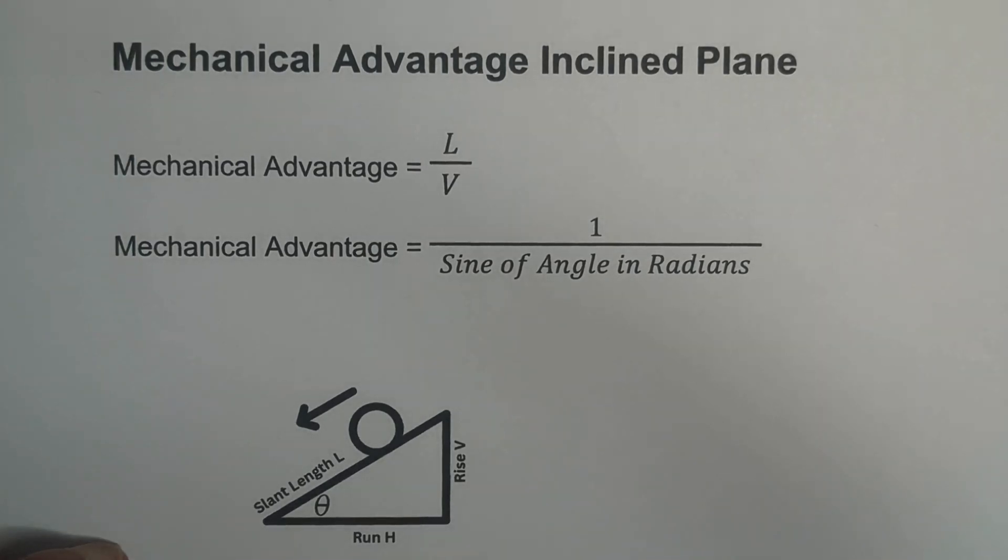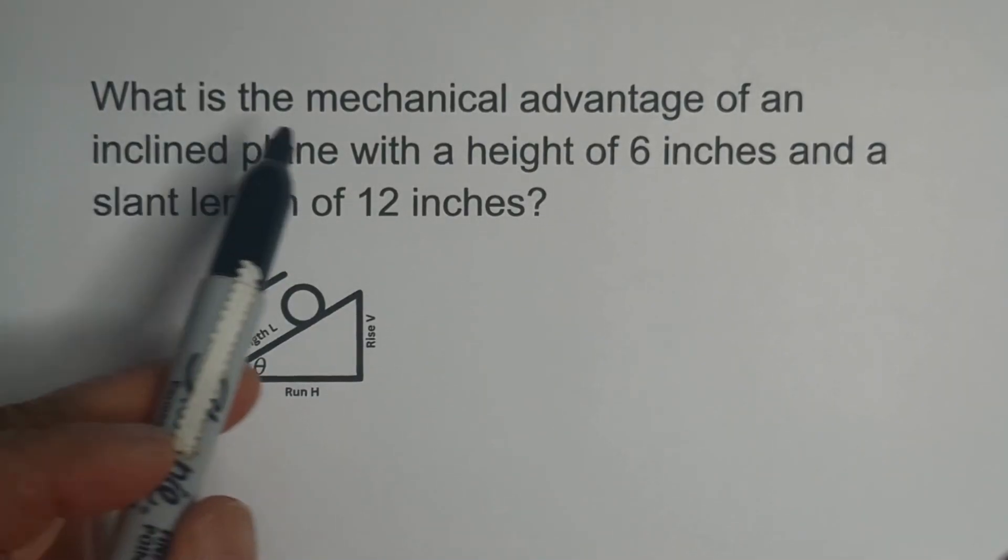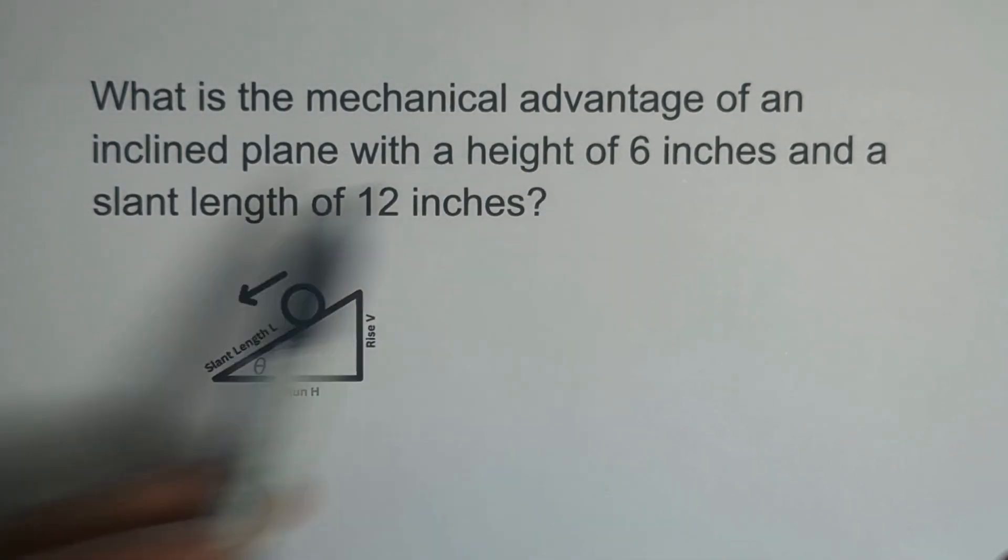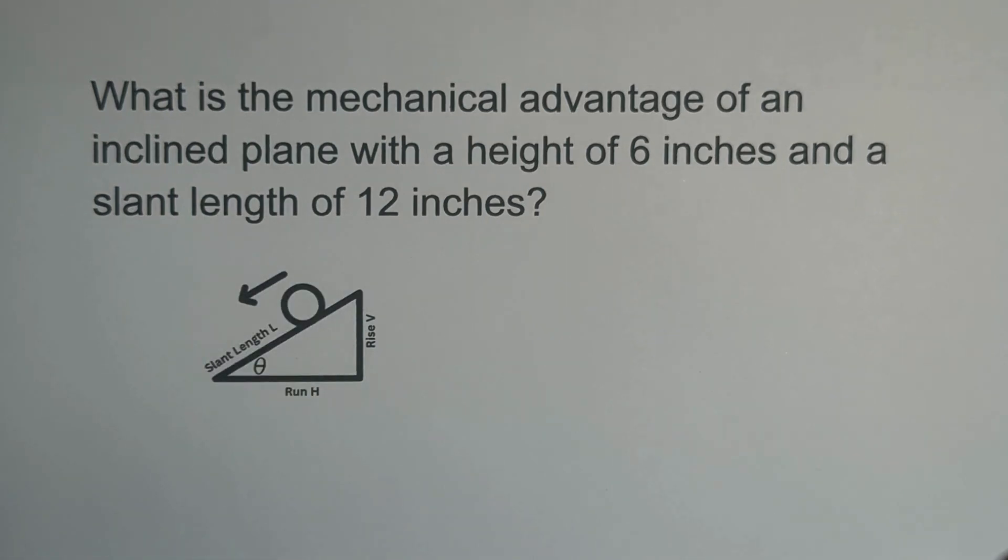So let's work two examples that use both of these formulas. This first problem is: what is the mechanical advantage of an inclined plane with a height of six inches and a slant length of 12 inches?